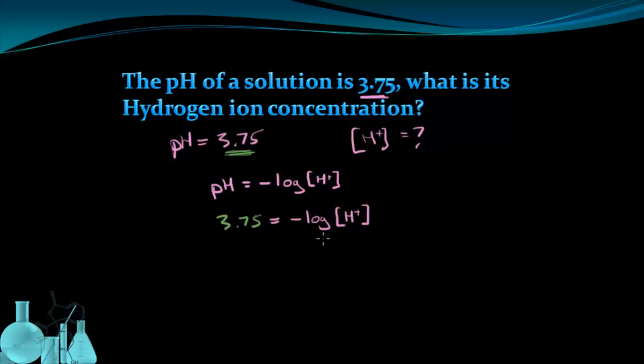The next thing I want to do is not deal with a negative log. So I'm going to multiply both sides by negative 1, making this a positive and making this a negative. So I just flip the signs.